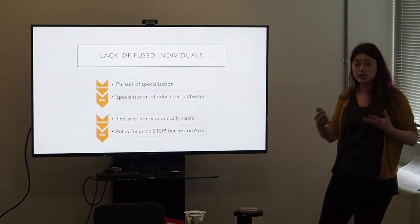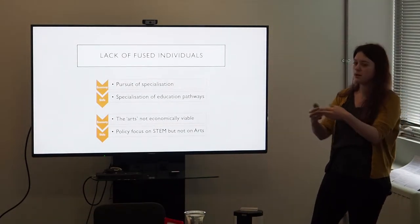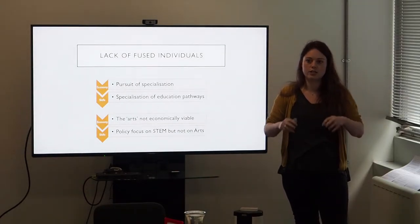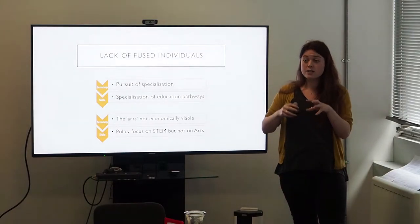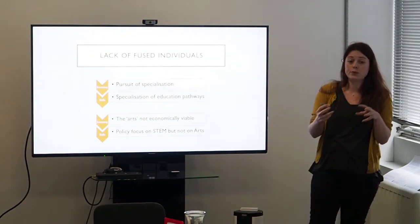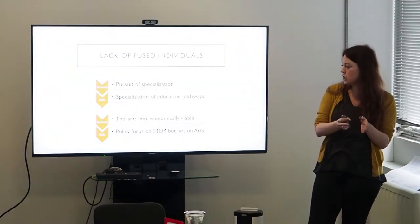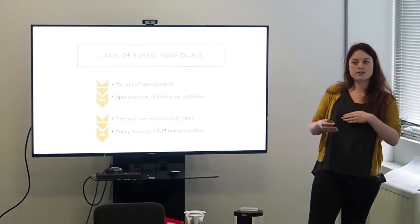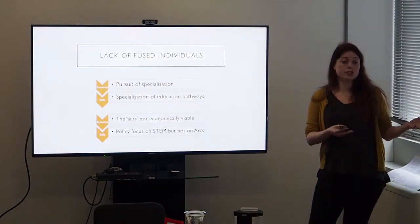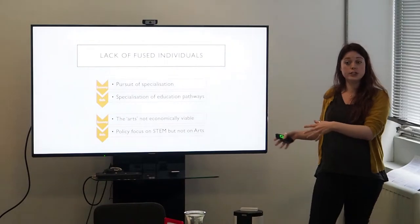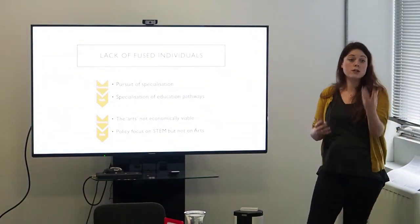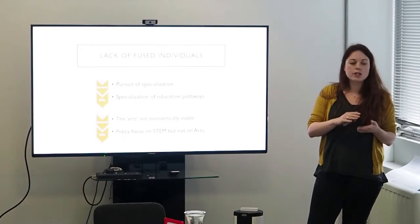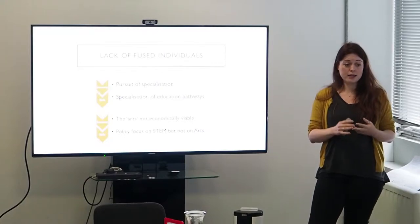So why is there a lack of fused individuals? So since the Industrial Revolution, there's been a pursuit of specialization. So the way that the economy functions is through specialization. The economy has become more and more specialised. And because the economy has become more and more specialised, the skills that people require have become more and more specialised. And we have a specialization of educational pathways. So, for example, in the US, in higher education, they have majors and minors. And first and second year undergraduates will be able to choose a variety of different modules from different subjects. And then they sort of specialise slightly later on. In the UK, in higher education, we have one subject. And it's really, really specialised. And even before then, at A level, we choose maybe two or three A levels or possibly one NVQ or one BTEC. And they're highly, highly specialised.